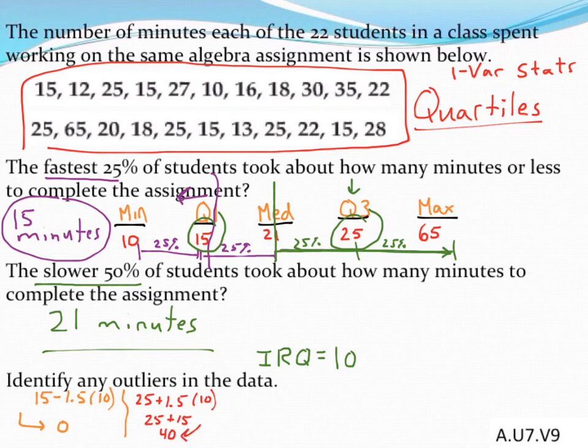If I have any data that occurred after minute 40, that would represent an outlier, an extreme value in this data set. If I go back and look through my data, do I see any values that are above 40? Yeah, I do. This student that took 65 minutes is definitely going to be an outlier.